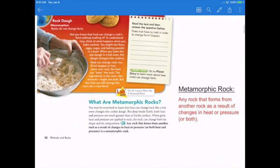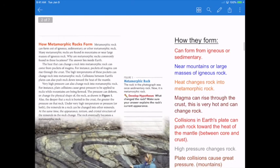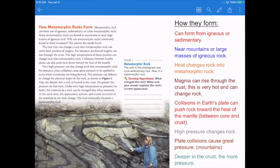So how are they formed? A couple things: they can form again from igneous or sedimentary or other metamorphic rock. Lots of times they're near mountains or large masses of igneous rock.